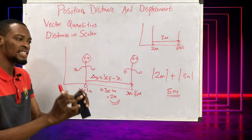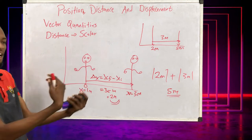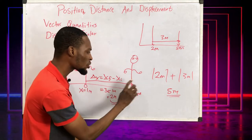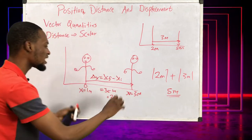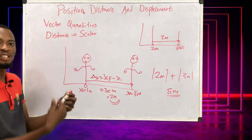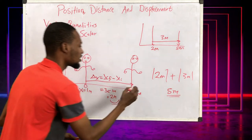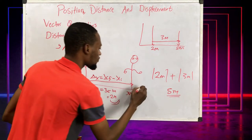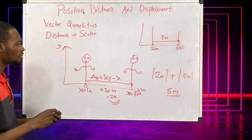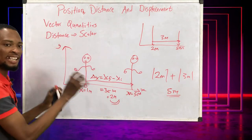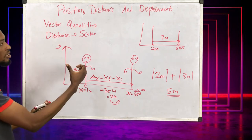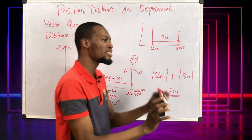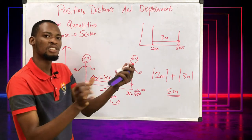We don't care about direction for distance. But position and displacement are vector quantities — they care about both magnitude and direction. If you look at displacement, there's an arrow sign, meaning we are concerned with which direction the object moved and what its position is in space.